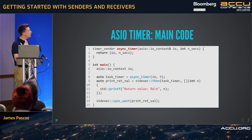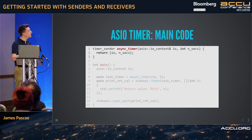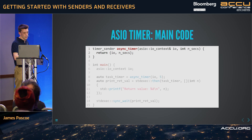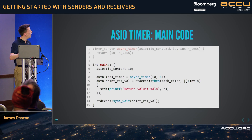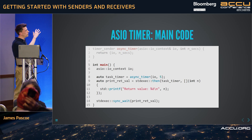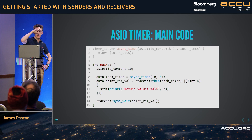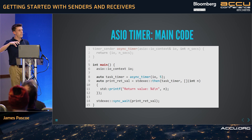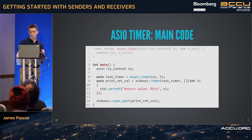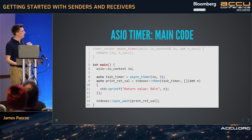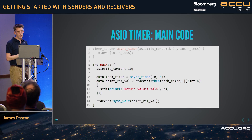Here's some main code — useful to see how we'd actually call this and do the setup. This function is something you might offer as an API function. I've got my async timer, creating it like this. In main, I just create a sender — that's what task_timer is. Then I use an adapter: 'then' takes an input sender, waits for it to complete, takes the result and passes it to the function you supply. And sync_wait is a sender consumer — an algorithm that takes a sender but doesn't return one; it blocks on the current thread until the sender resolves.